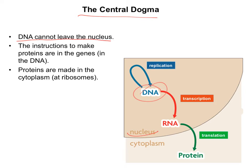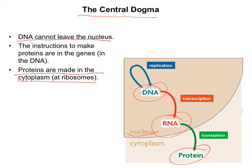However, we have a problem. The thing that makes protein is out in the cytoplasm. Proteins are made by ribosomes, which are either free-floating in the cytoplasm or on the rough ER. But in any case, we have to get the instructions in DNA out to the thing that puts together these proteins in the cytoplasm. So we need a middleman — we need a messenger to relay those directions out to the cytoplasm. And that's where RNA comes in.